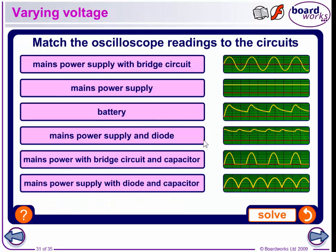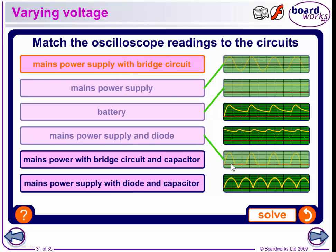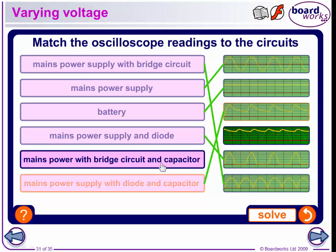Let's match the oscilloscope readings to the circuits. The battery is a fixed thing there. This one is a half rectified circuit. Our mains power supply is this. This is a mains supply and a diode. This is the mains supply with a bridge circuit but no capacitor. This is mains power with a bridge circuit and a capacitor. With a supply diode and a capacitor, this is a half rectified circuit — so this goes with this. And this is a fully rectified circuit with a capacitor.